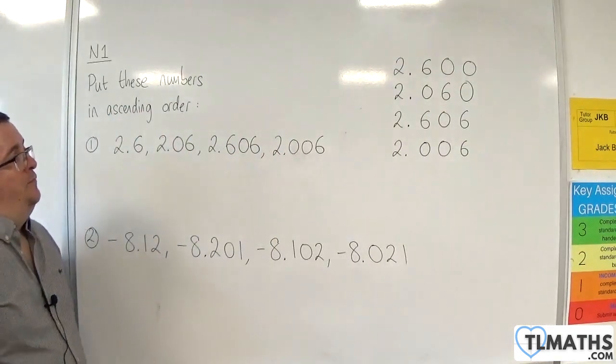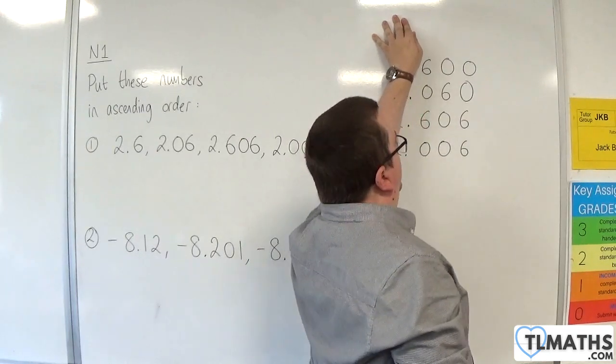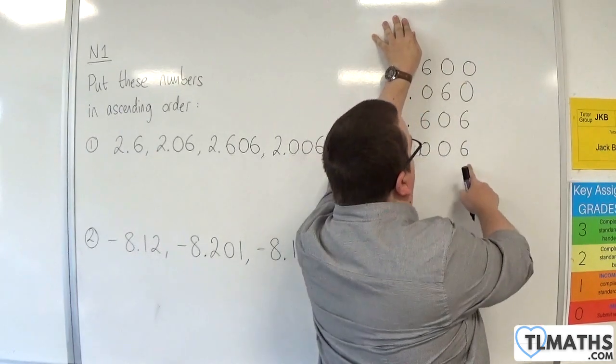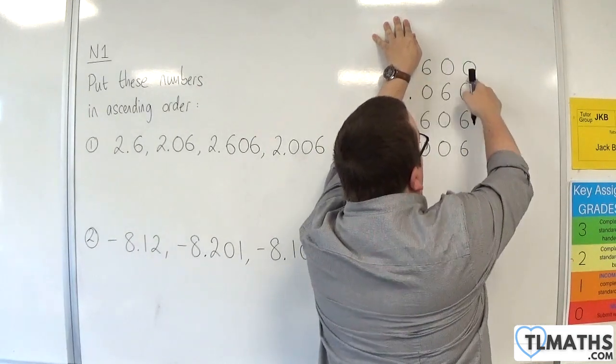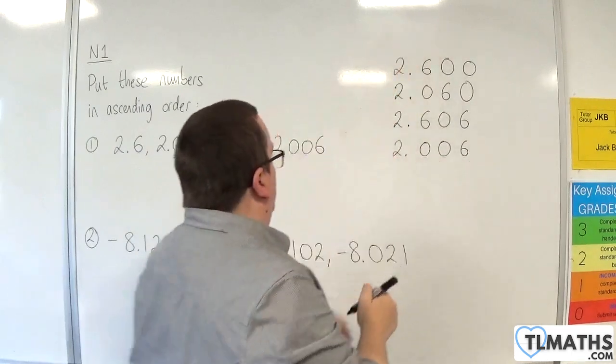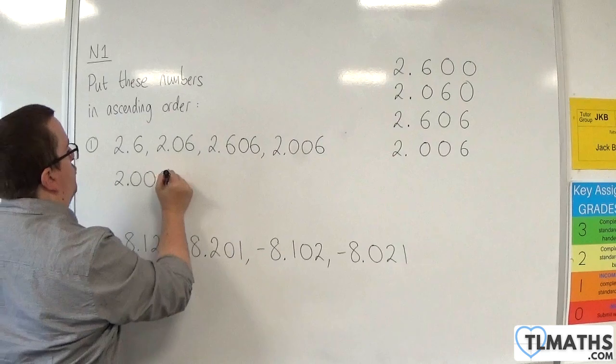Okay, so ignoring that column, then I look for the smallest number. And I've got 6. The next one would be 60, then 600, then 606. So the smallest is 2.006.